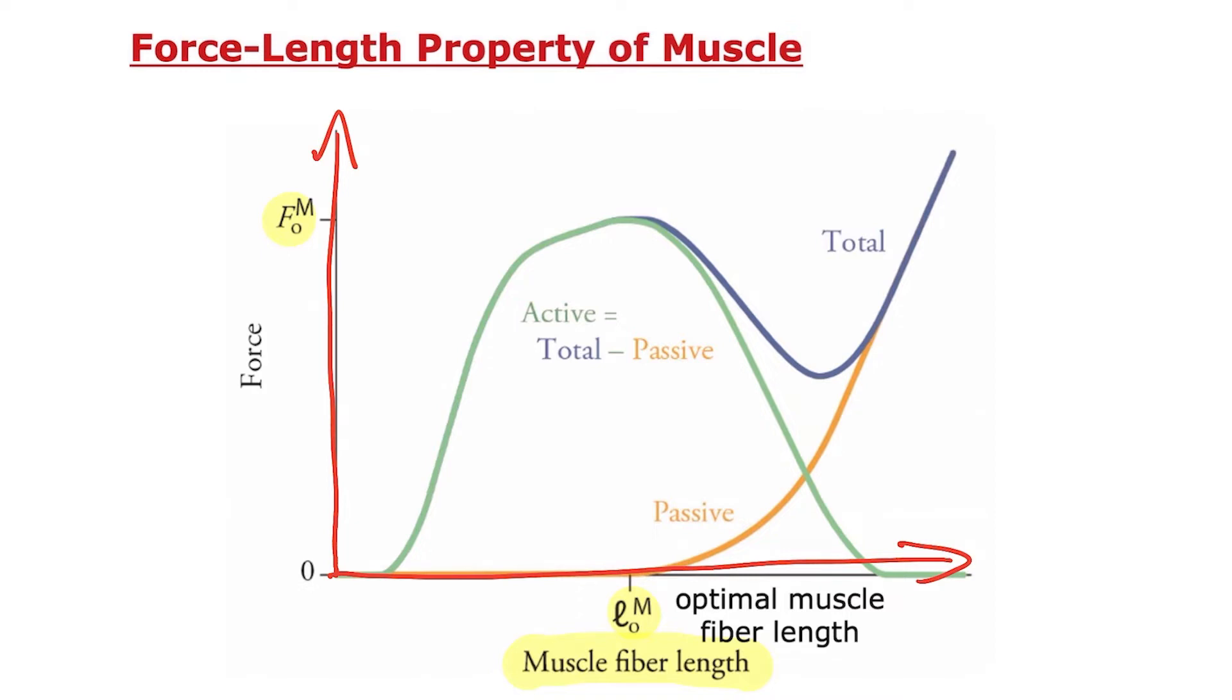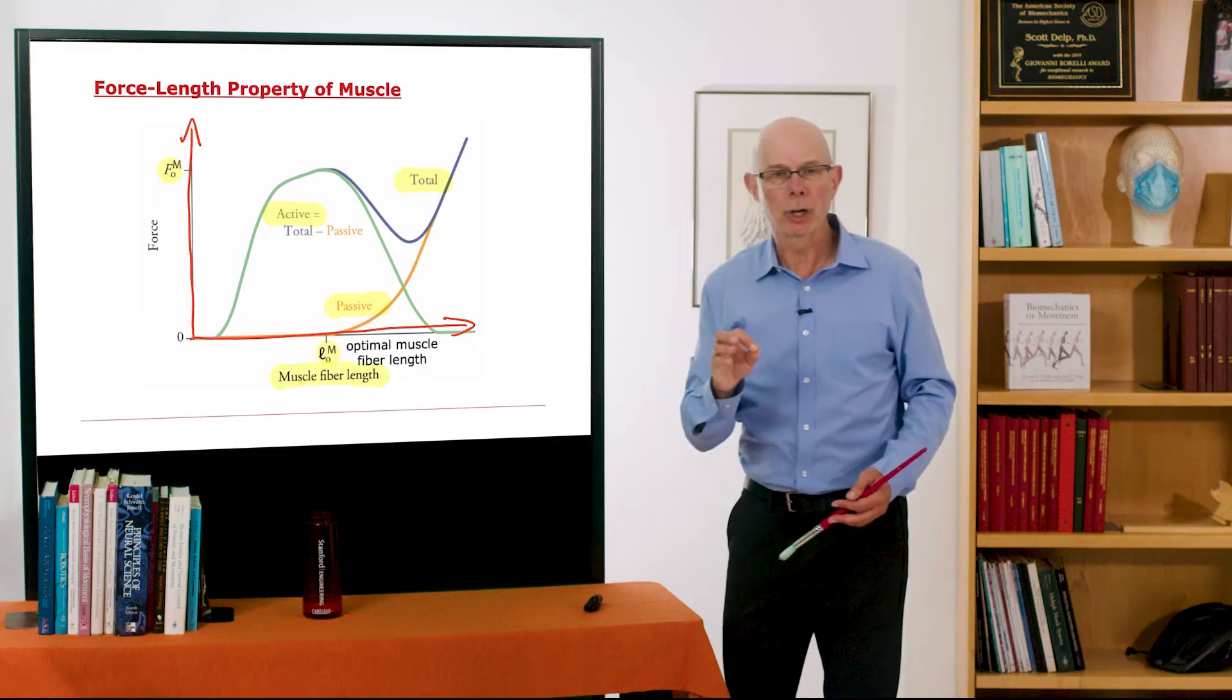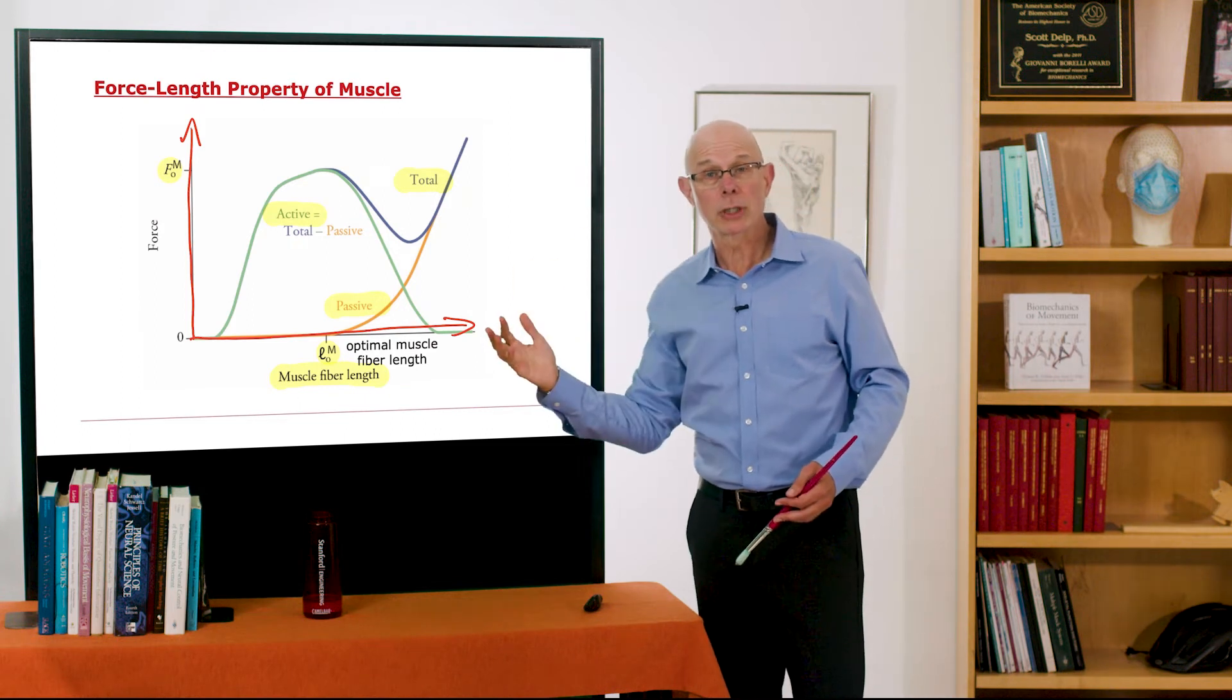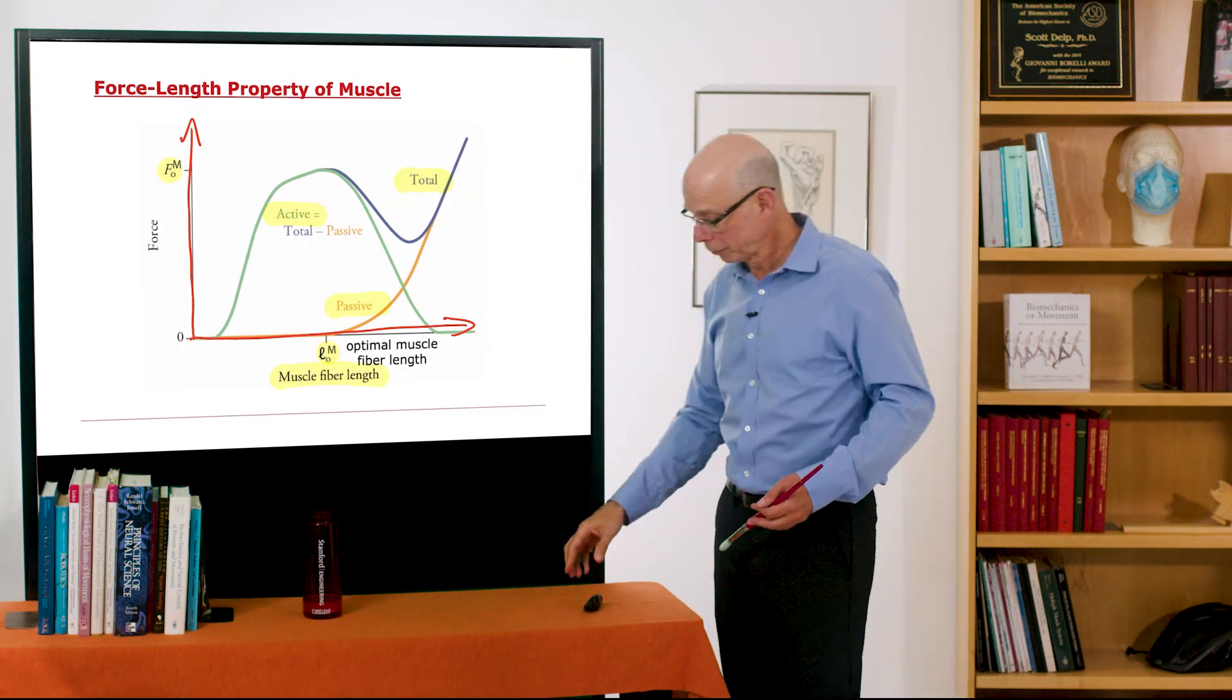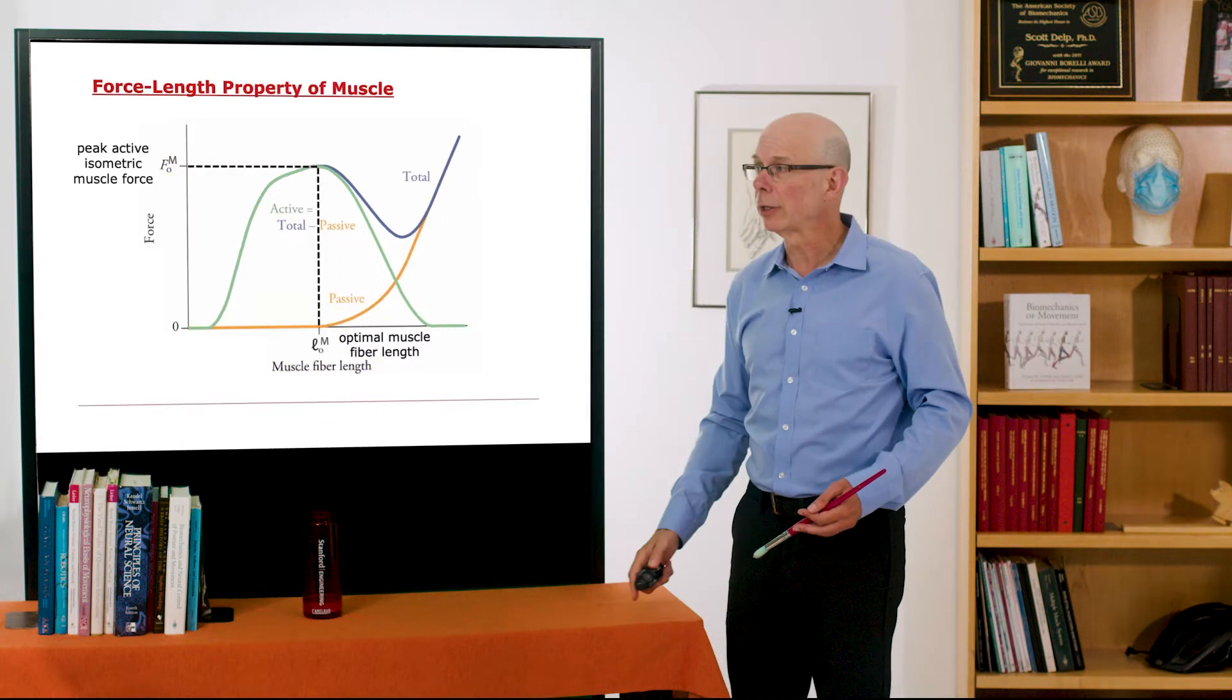A couple other things to define, we know that the active curve shown in green here is the total curve minus the passive curve. So that'll be important to keep in mind as we move through this lecture and as you do the homework problems associated with the bulk. So that's the force-length relationship.